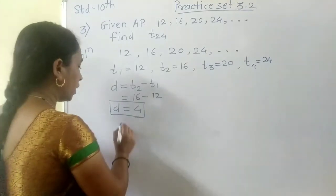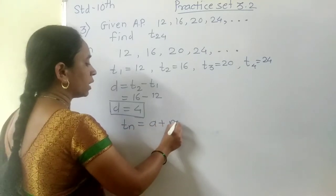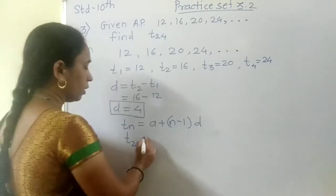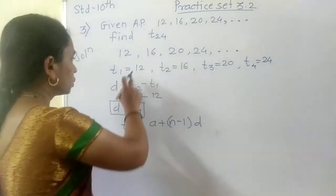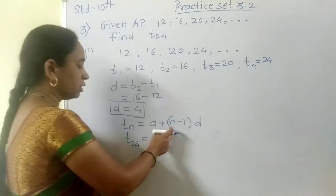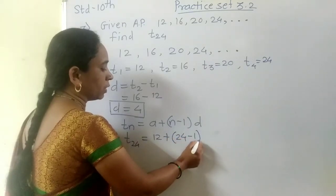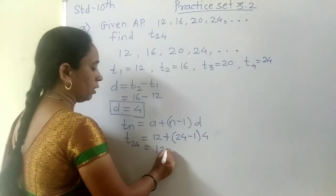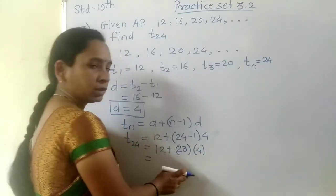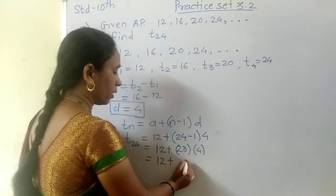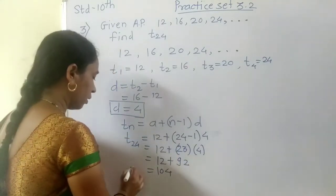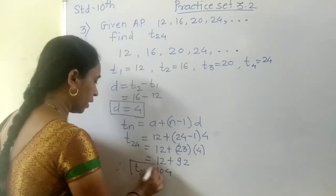We have to find T24 using the formula TN equals A plus (N minus 1) times D. N equals 24, A equals 12, D equals 4. T24 equals 12 plus (24 minus 1) times 4 equals 12 plus 23 times 4 equals 12 plus 92 equals 104. Therefore T24 equals 104.